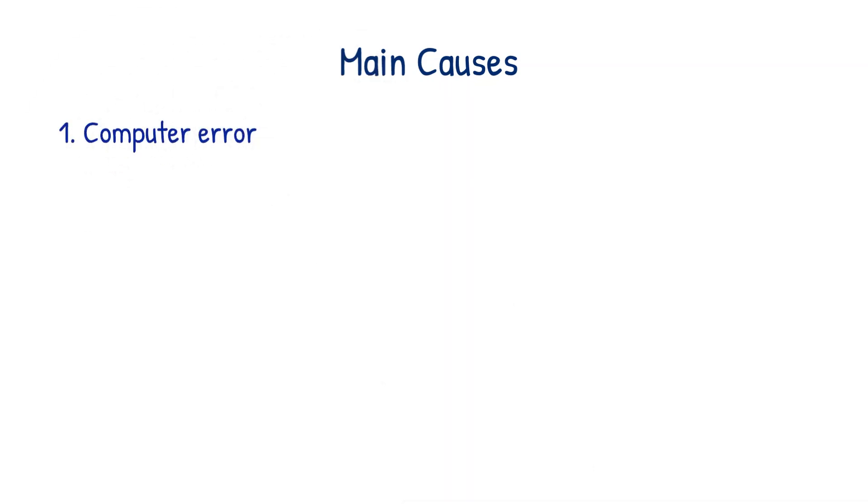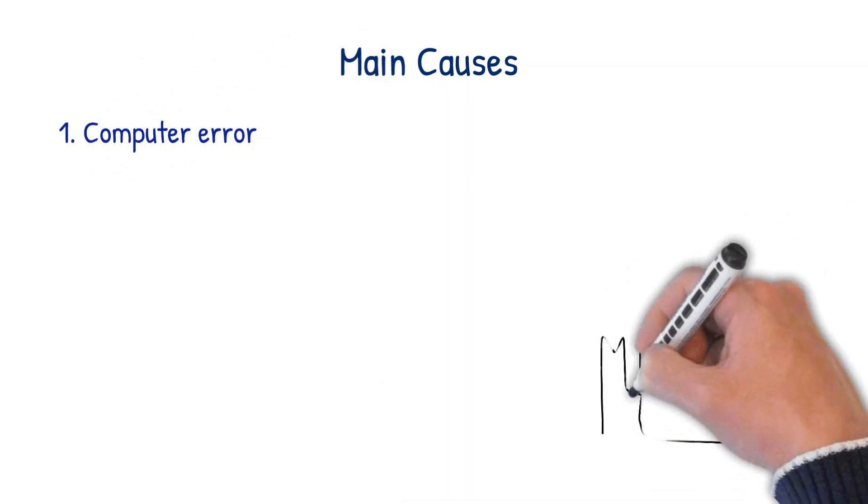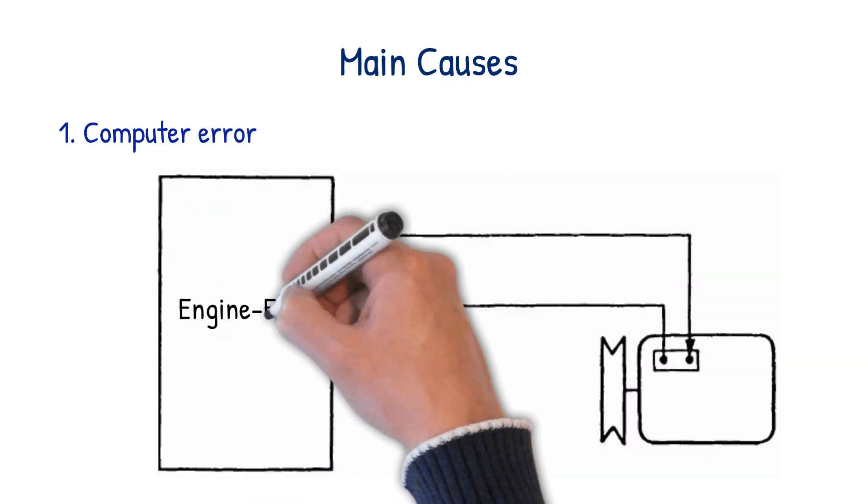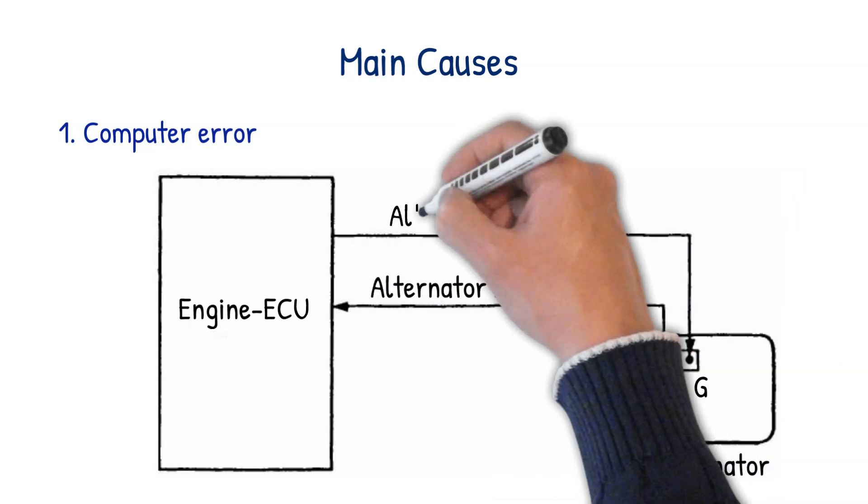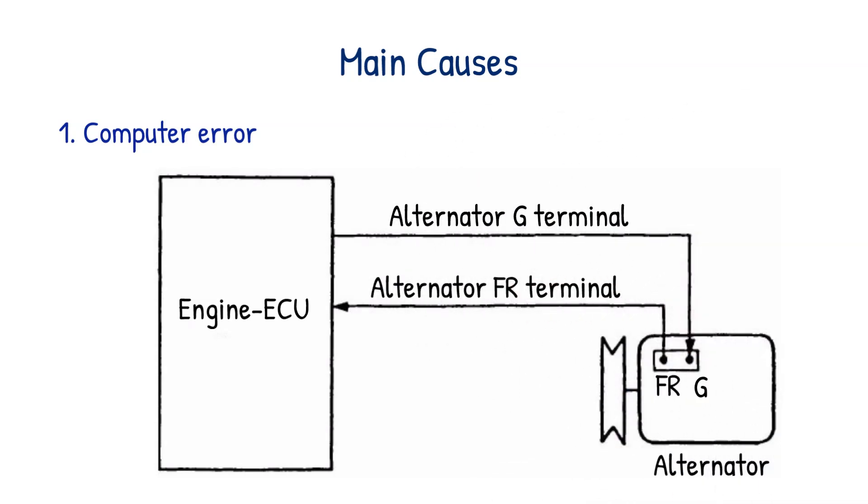One of these main causes is computer error. Most people are driving cars from within the last 20 years. These cars all have a central computer system or engine control unit (ECU), which manages and operates the vehicle's components and parts. This computer manages the alternator as well. Therefore, all it would take is a computer error and the result would be a malfunctioning alternator, preventing it from charging.